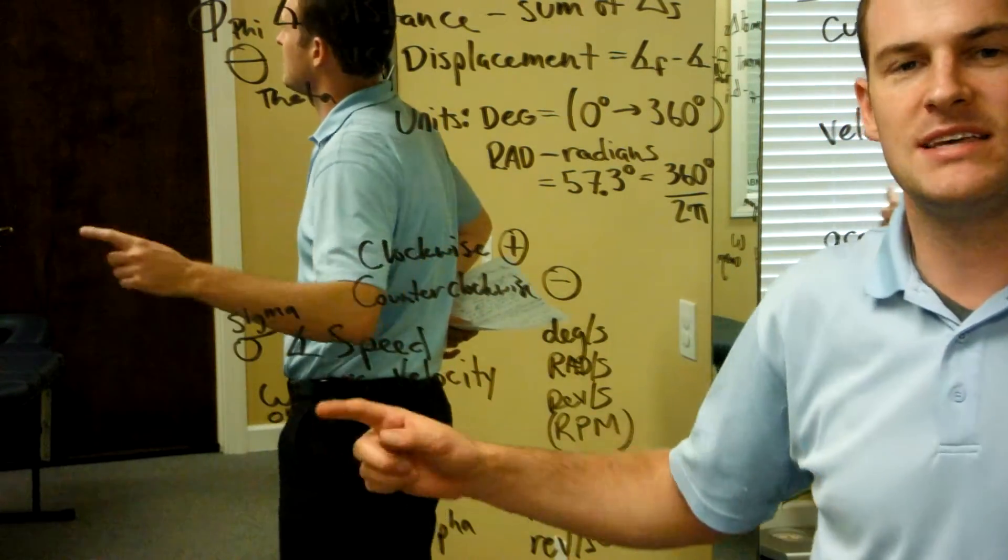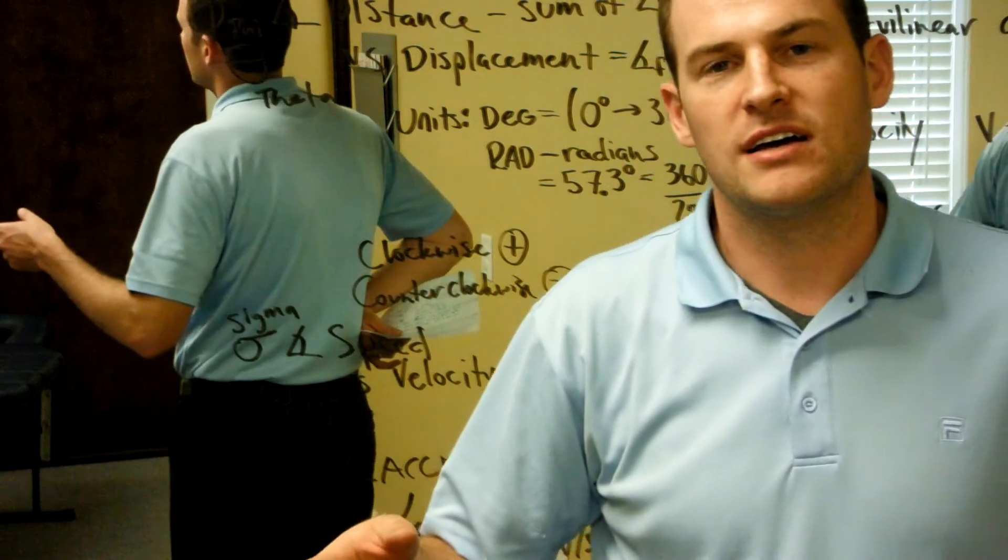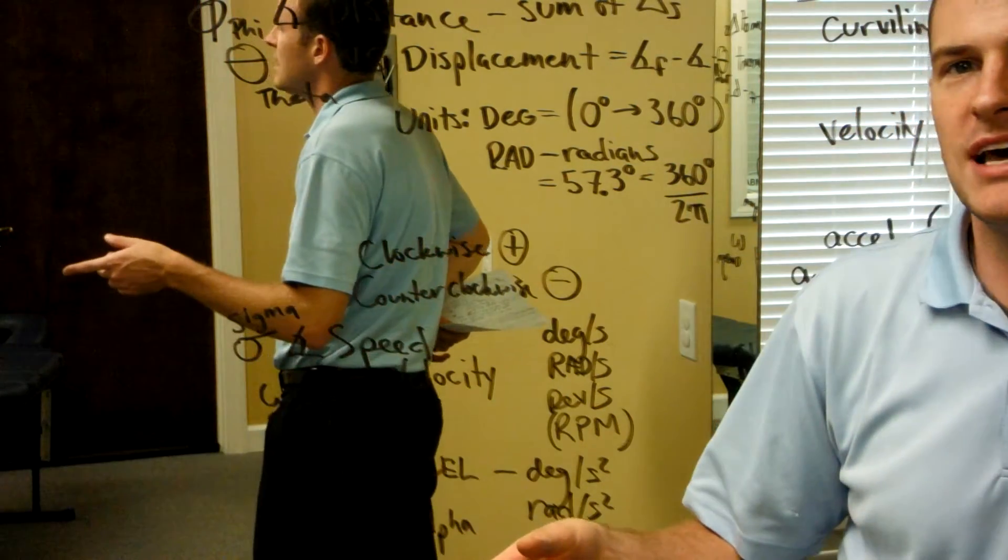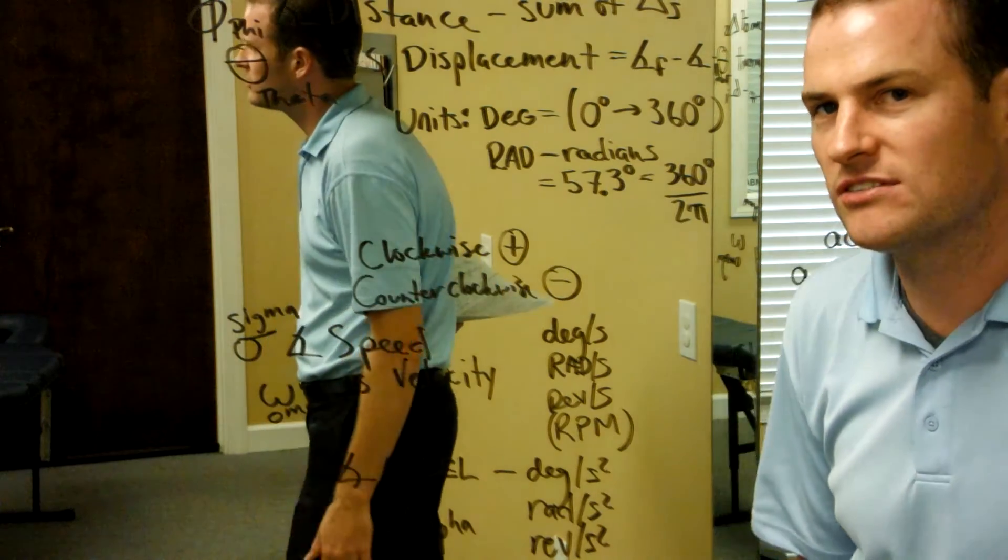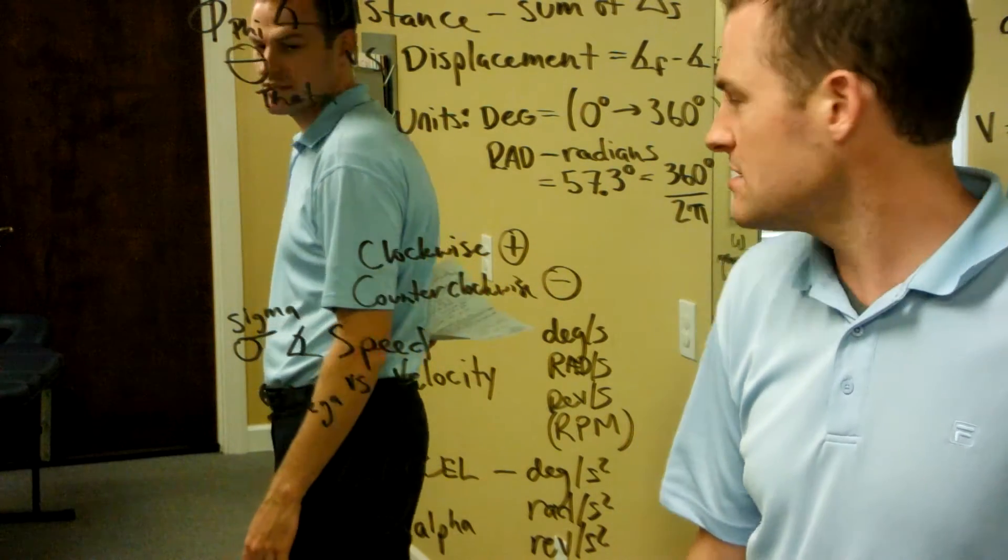Clockwise is labeled as a positive direction. Counterclockwise is labeled as a negative direction. That is generally agreed upon in biomechanics texts.